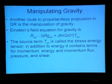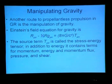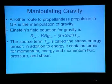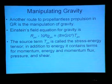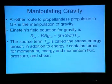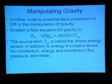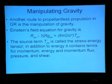Another route to propellantless propulsion is the manipulation of gravity. We've seen Einstein's field equation for gravity before, and I want to concentrate on the source term, which is called T mu nu — the stress-energy tensor. In addition to energy, it contains terms for momentum, energy and momentum flux, pressure, and shear.